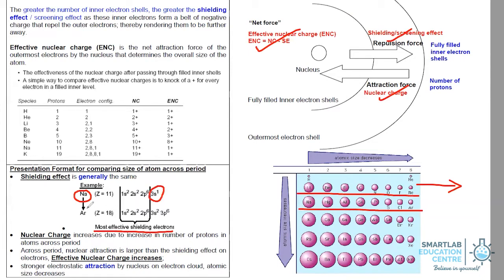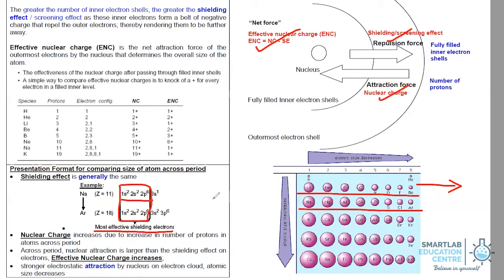Similarly, all the way up to argon, the outermost electrons are all in the third electron shell. So in this case, only the electrons in the first and second electron shells are responsible — most effective in providing shielding or screening effect. As you can see, when you move across the period, the shielding effect is generally the same because all of them have two fully filled inner electron shells.